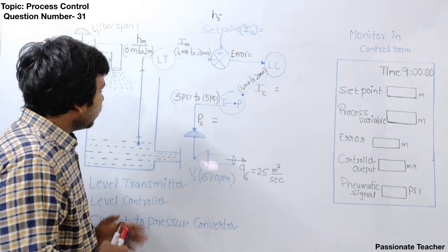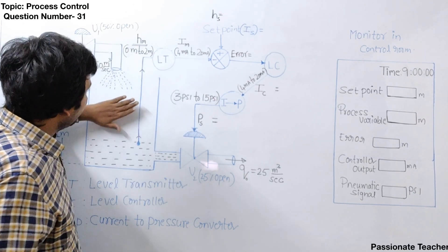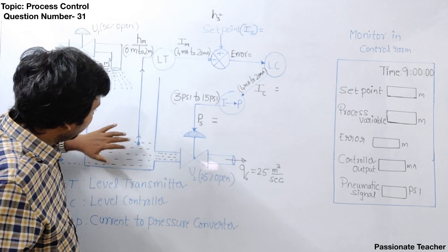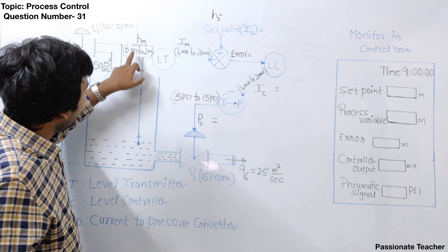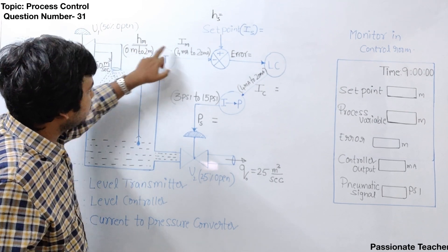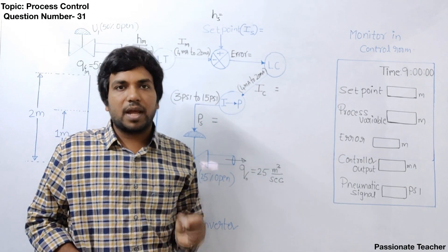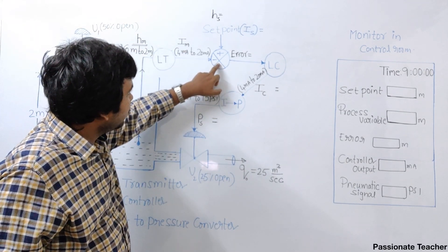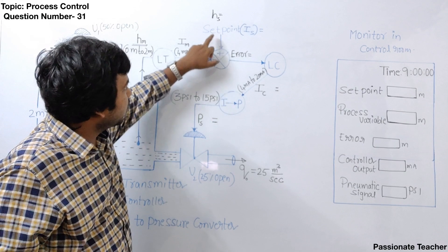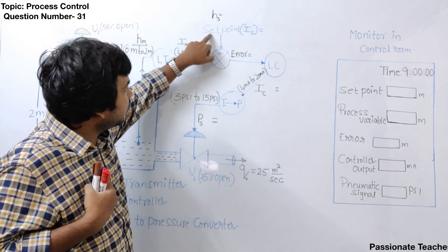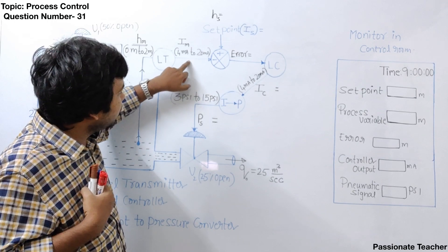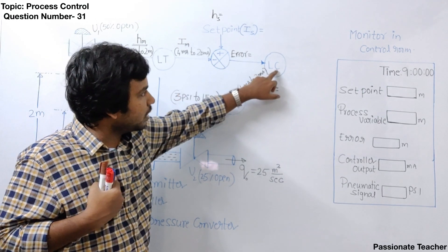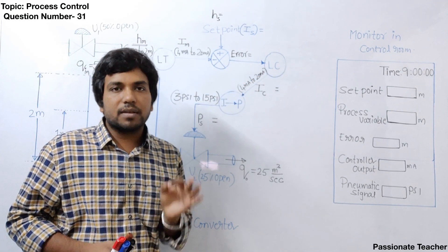Now looking at the overall figure, there is a device called a level transmitter. This level transmitter measures the water level inside the tank and converts it into current, because current is a very standard signal used in process instrumentation. This current goes to the error detector, which receives the desired input. The difference between the desired input and the measured value is subtracted by the error detector, and the error is given to the level controller (LC).